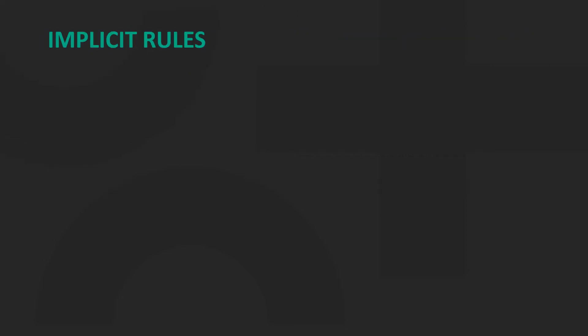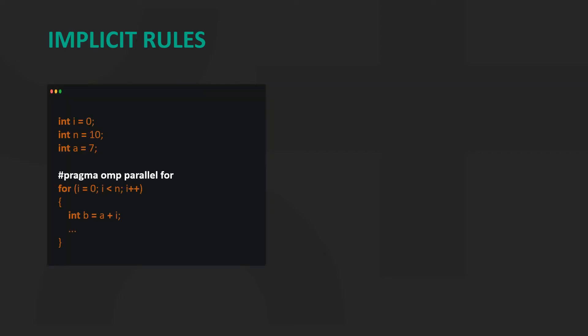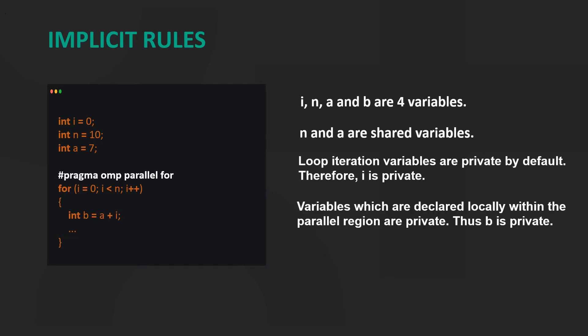If a variable is private, then each thread in a team of threads has its own local copy of the private variable. OpenMP has a set of rules which deduce the data sharing attributes of variables. For example, consider the following snippet of code with four variables: i, n, a, and b. Variables declared outside the parallel region are usually shared, therefore n and a are shared variables. Loop iteration variables are private by default, therefore i is private. Variables declared locally within the parallel region are private, thus b is private.